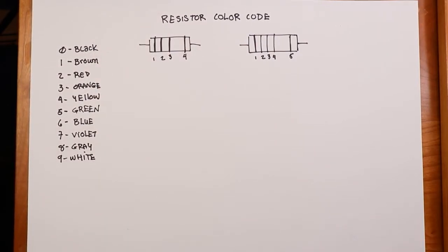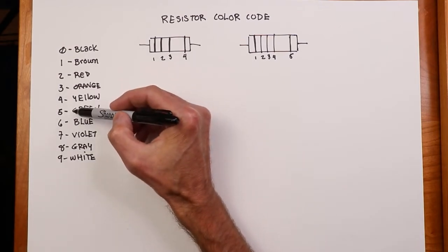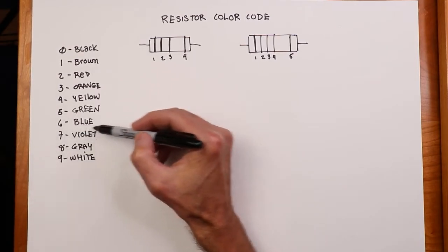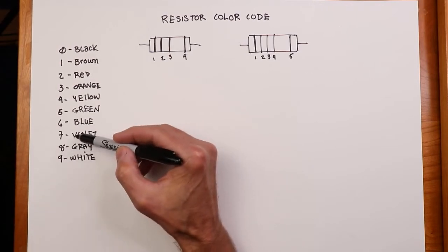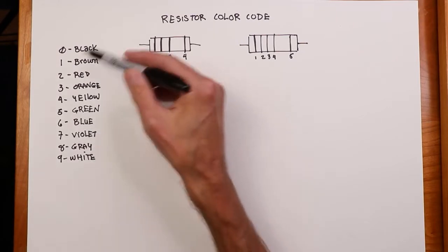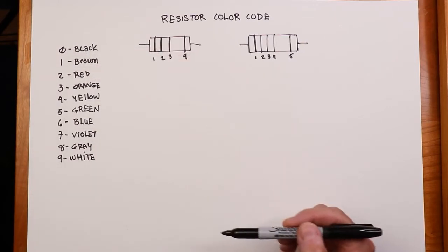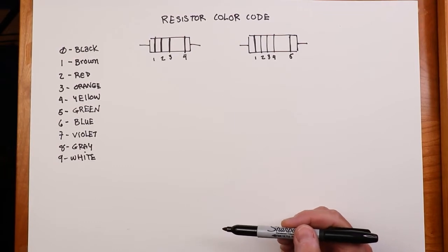If you took a physics course, you might have heard of Roy G. Biv, the way to remember this. Red, orange, yellow, green, blue. They would throw in an indigo here, violet. It's just too hard to tell the difference between indigo and violet when you're looking at a color code, so we just kind of skip over that.